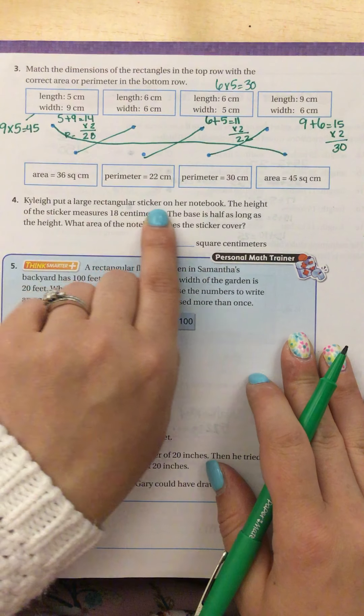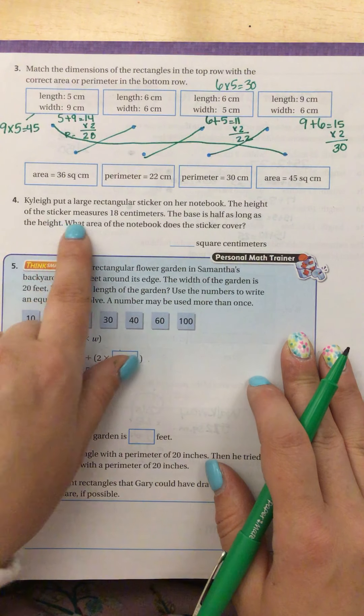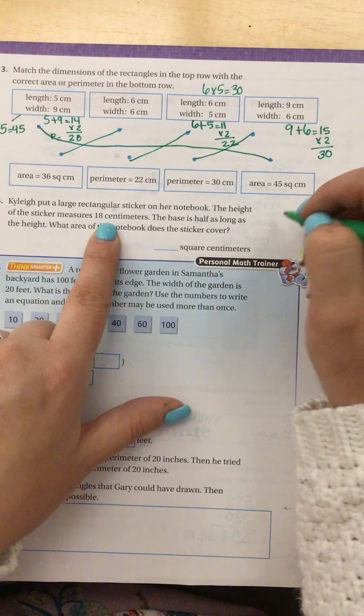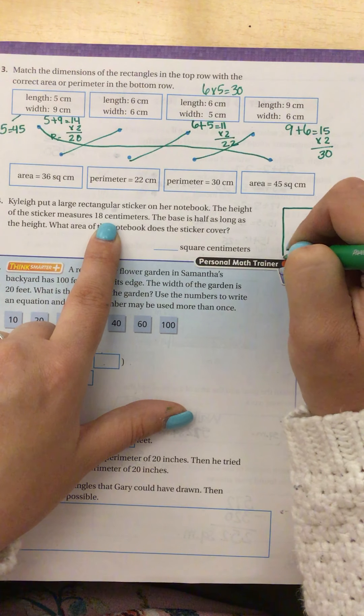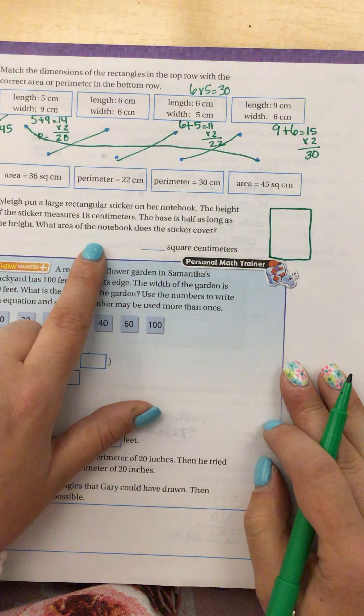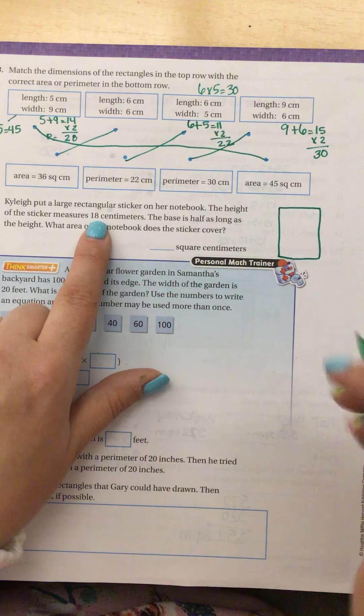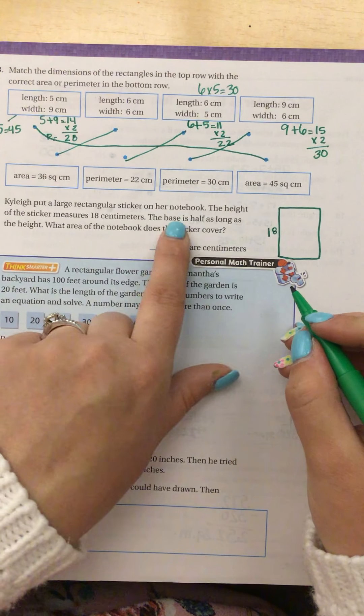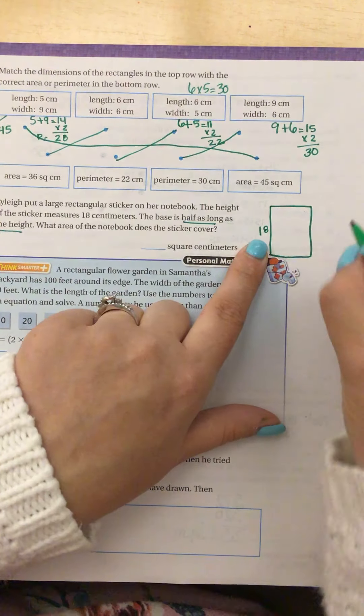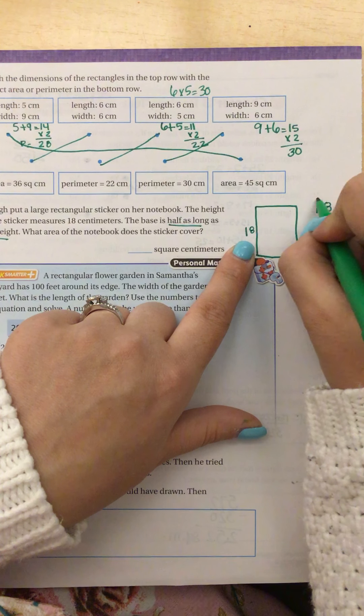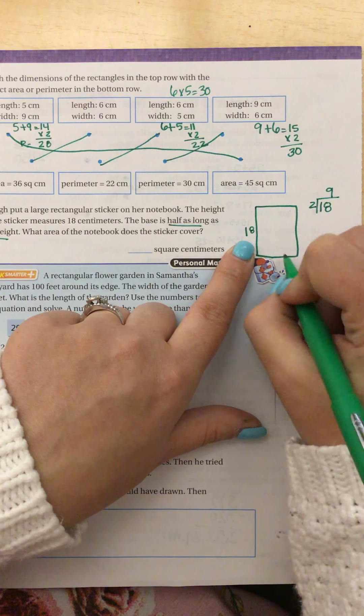Okay, next question. Kylie put a large rectangular sticker on her notebook. The height of the sticker measures 18. So I'm going to go ahead and draw. I find with area, it is really easy to draw the picture and keep everything organized. So the height is 18. The base is half as long as the height. So half of the height means I'm going to do 18 divided by 2, and that is 9.